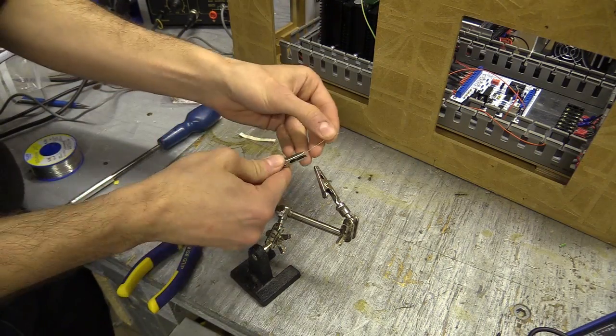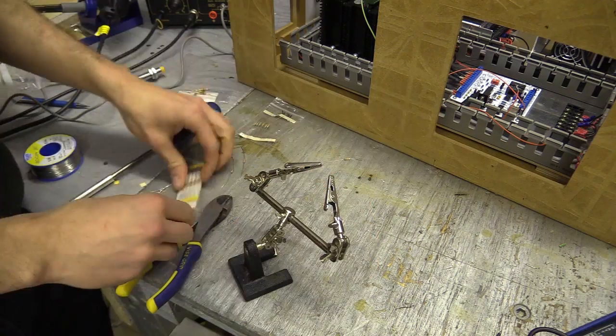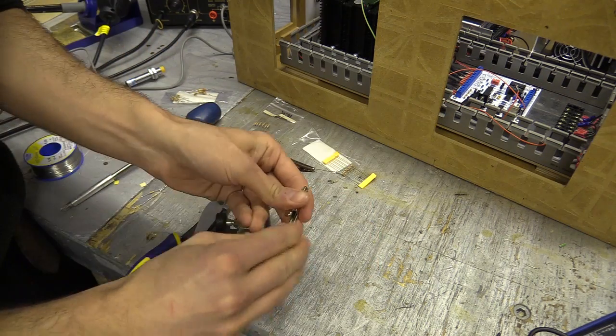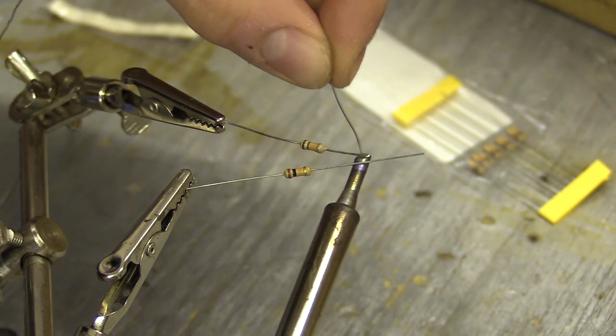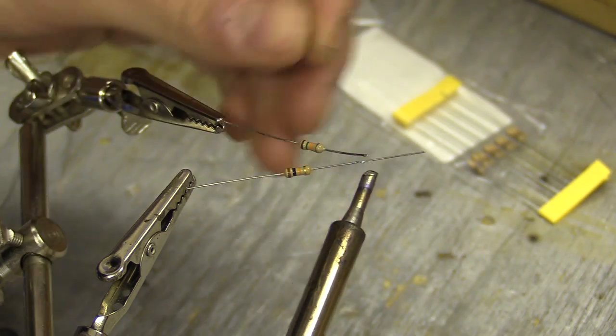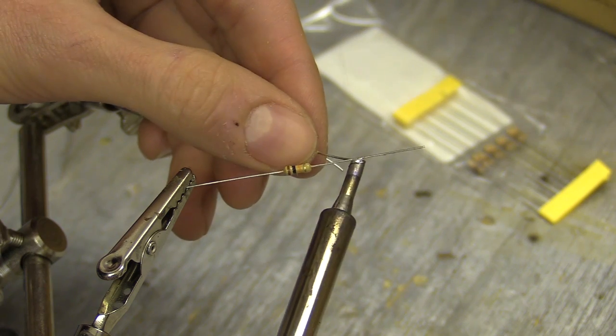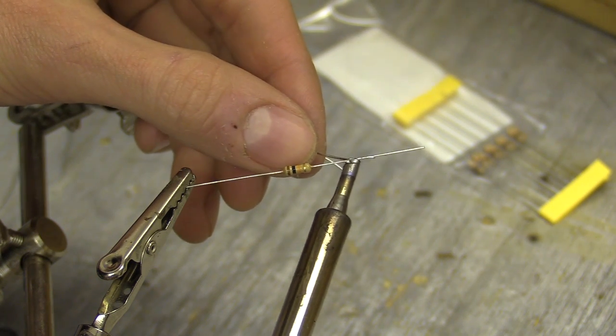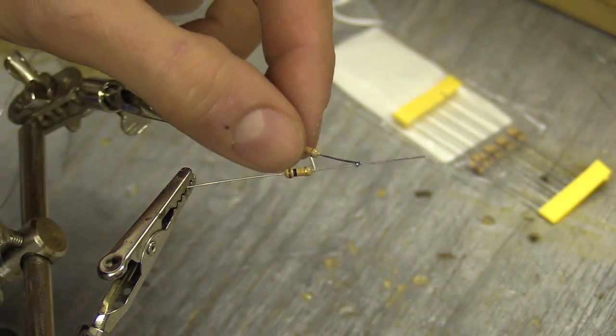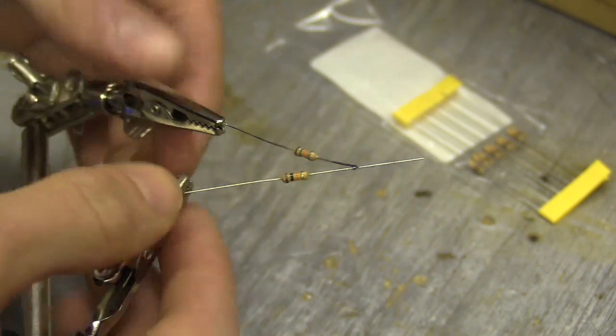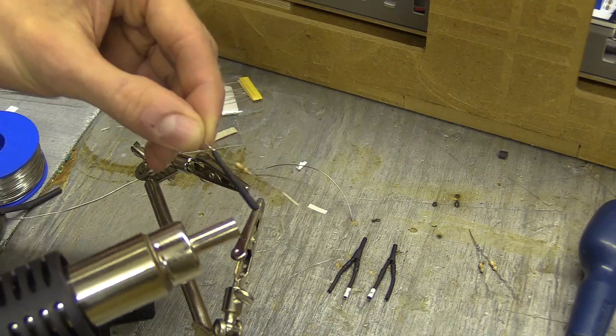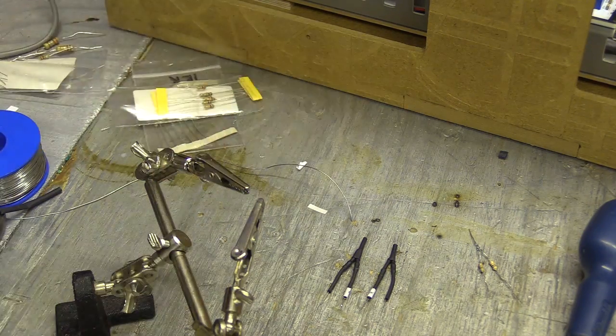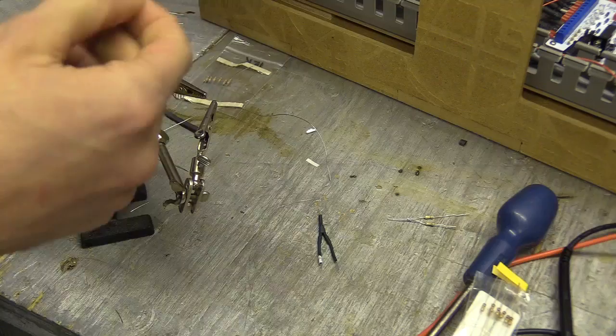Using the helping hands I hold the 10k and 15k resistors roughly in place, tin the two areas that will be joined and finally solder the two wires together. I used heat shrink to cover the exposed wires and label one resistor so I know how to orientate them while installing.